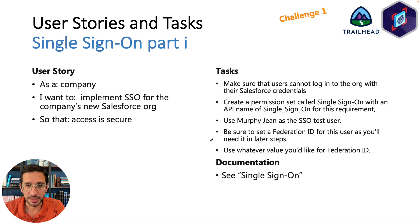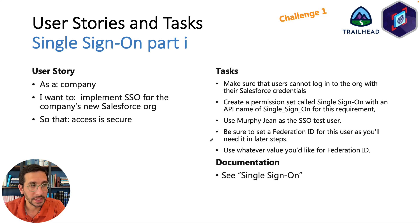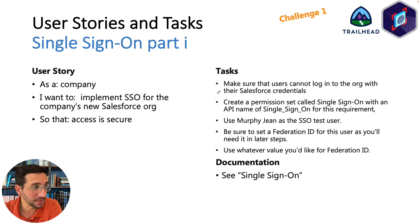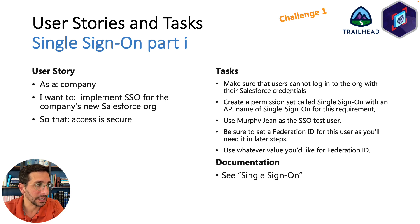That's the first part of Challenge One. The second part is the Single Sign-On part one. The use case is: as a company, we want to implement SSO for the company's new Salesforce org so that access is secure. The things you're going to do are to make sure users cannot log in to the org with their Salesforce credentials, and instead you're going to create a permission set called Single Sign-On with an API name of single_sign_on for this requirement.